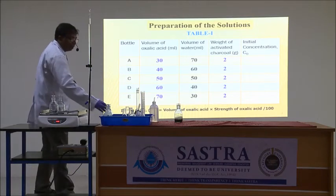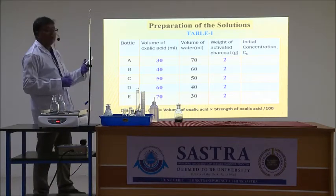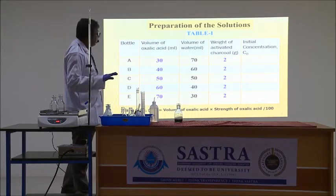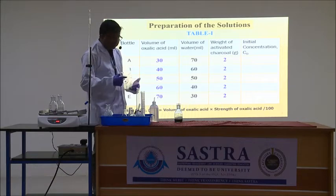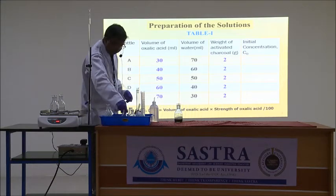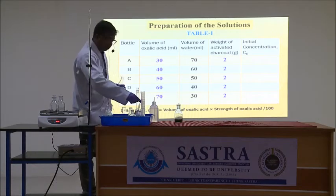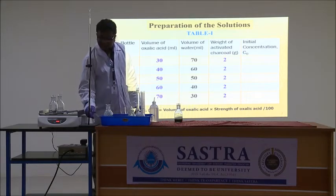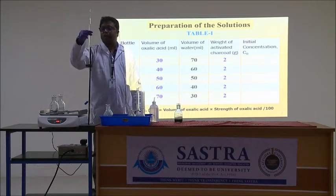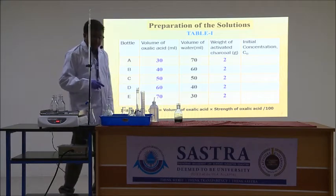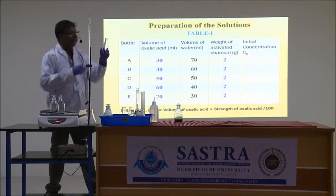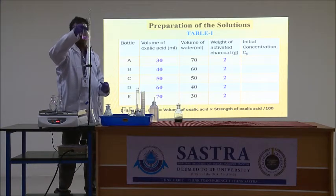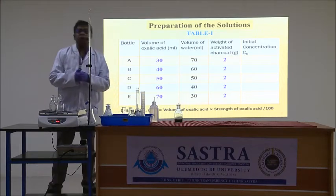First, 15 to 20 ml of the initial filtrate is rejected, because some amount of oxalic acid will be absorbed by the filter paper. After that, we collect 20 ml of the filtrate into another conical flask and add two drops of phenolphthalein indicator — the solution is colorless at this point. We then titrate against the standard sodium hydroxide solution kept in the burette. The endpoint is detected when the solution turns pink and the color persists. The titration is repeated to get concordant values.